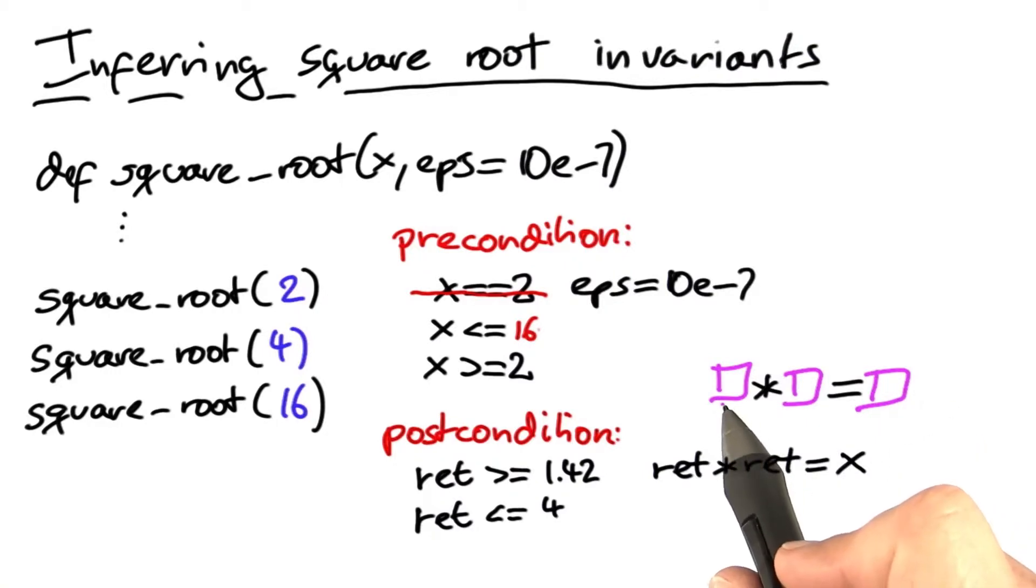And this is instantiated with the return value, again with the return value, and with x. And this pattern then holds for all runs, at least for all runs with integer numbers.